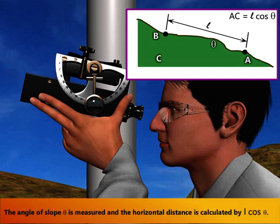The angle of slope theta is measured and the horizontal distance is calculated by L cos theta.